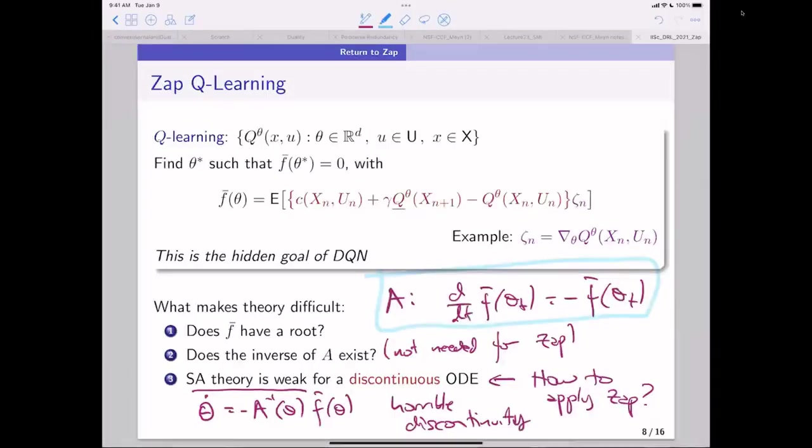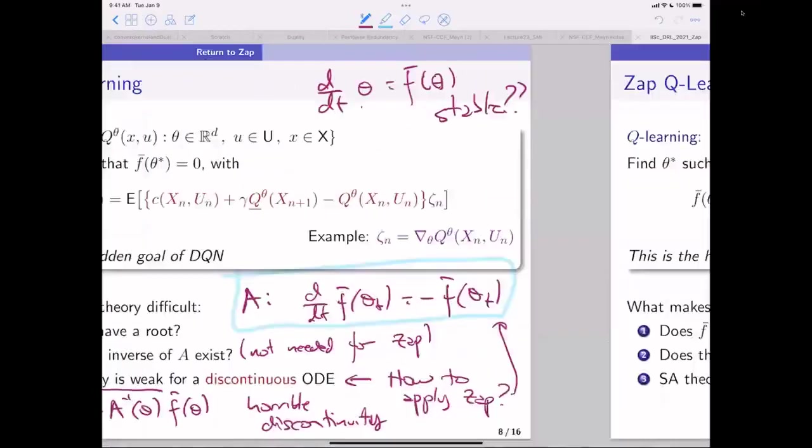But d/dt F bar of theta T is just equal to minus F bar of theta T. And so there's your answer. So that's what we're, that was a breakthrough last year. So the NIPS paper is all about showing that even though it's a discontinuous ODE for Zap, which just causes horrible problems, we can still get the same stability guarantees. And I'll wrap things up with an example, but I know there's some questions. For, I mean, the original ODE. Again, that is an open question. I think it always will be. It's just too hard.